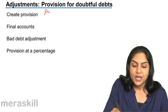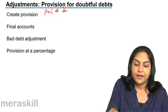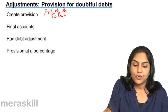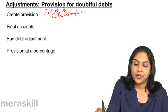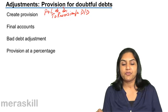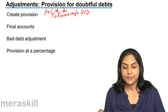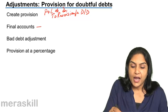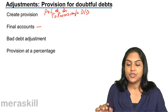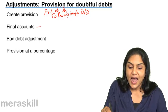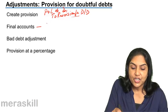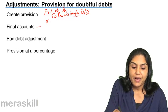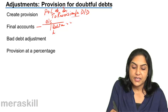The entry to create a provision is: Profit and Loss Account debit to Provision for Doubtful Debts. This is how we create a provision for doubtful debts. In the final accounts, this provision account is shown as a deduction from debtors on the asset side of the balance sheet — we show debtors less provision for doubtful debts.